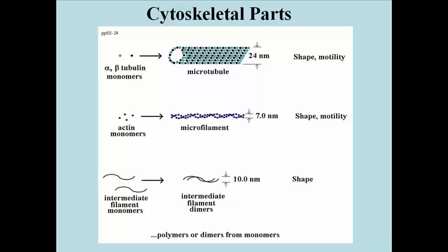And thirdly, intermediate filaments at about 10 nanometers in diameter are aptly named because they're in the middle in their diameter between microtubules and microfilaments. They're formed as dimers of extended polypeptides. That simply means that these polypeptides don't have much three-dimensional or tertiary structure.